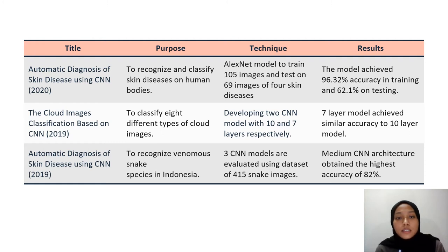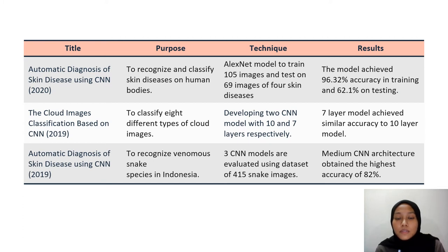The second research title is Cloud Images Classification Based on CNN, from the year 2019. It used two CNN models with seven and ten layers. The seven-layer model was able to achieve similar accuracy to the ten-layer model.